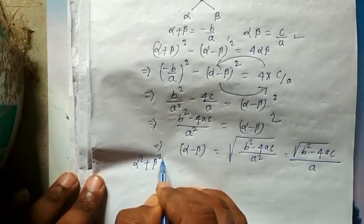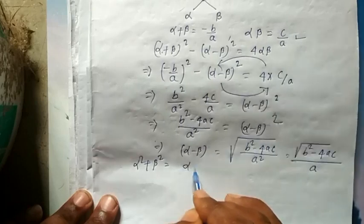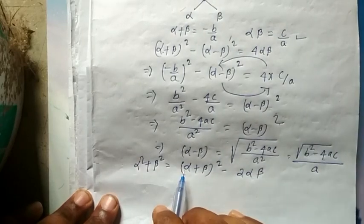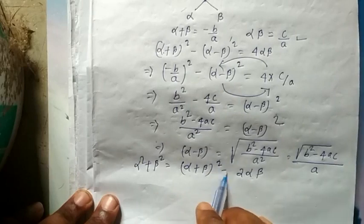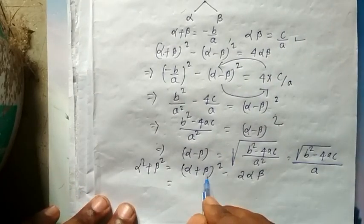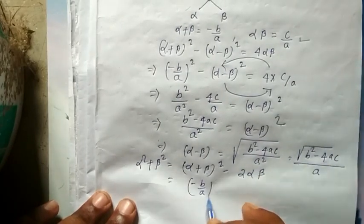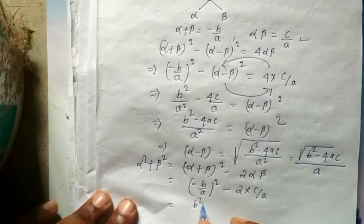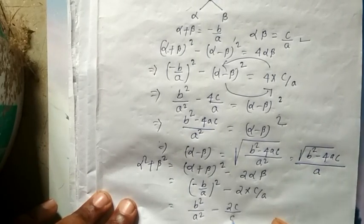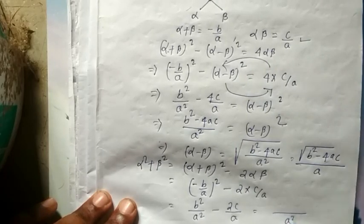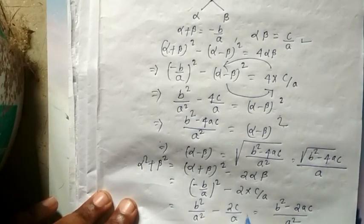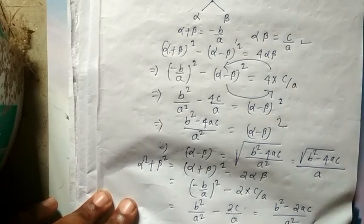Similarly, you want to find α²+β². You know that α²+β² = (α+β)²-2αβ. You can also apply (α-β)²+2αβ. In place of α+β, substitute -b/a: (-b/a)² minus 2 times c/a = b²/a² minus 2ac/a. So α²+β² = (b²-2ac)/a².